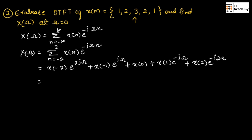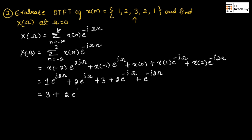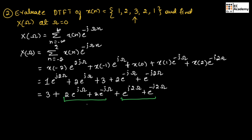Substituting the values of n from minus 2 to 2, we get 1 exponential to the power of j 2 omega plus 2 exponential to the power of j omega plus 3 plus 2 exponential to the power of minus j omega plus exponential to the power of minus j 2 omega. Rearranging: 3 plus 2 exponential to the power of j omega plus 2 exponential to the power of minus j omega plus exponential to the power of j 2 omega plus exponential to the power of minus j 2 omega. These pairs can be written in cosine form, giving us 3 plus 4 cos omega plus 2 cos 2 omega.